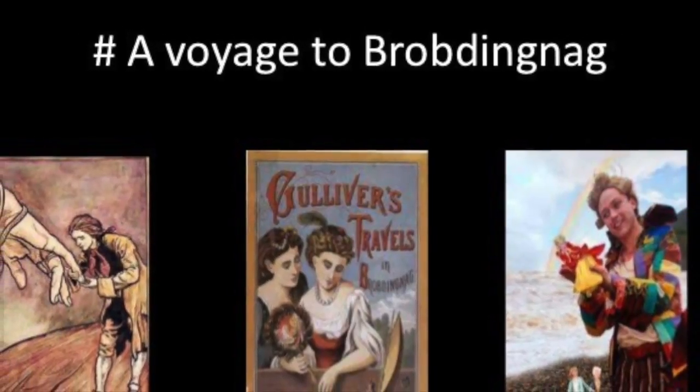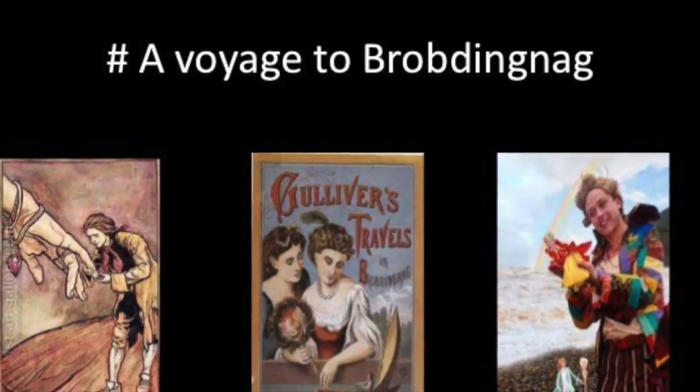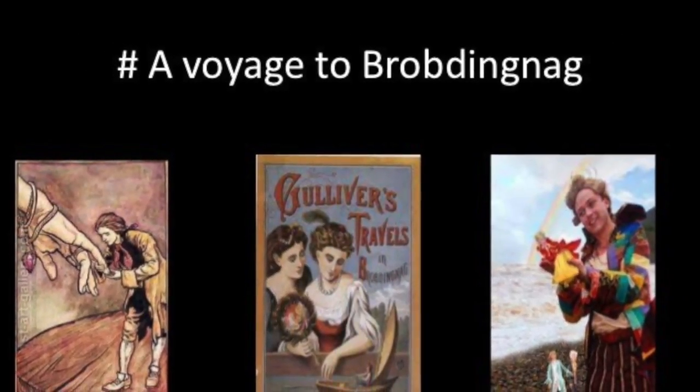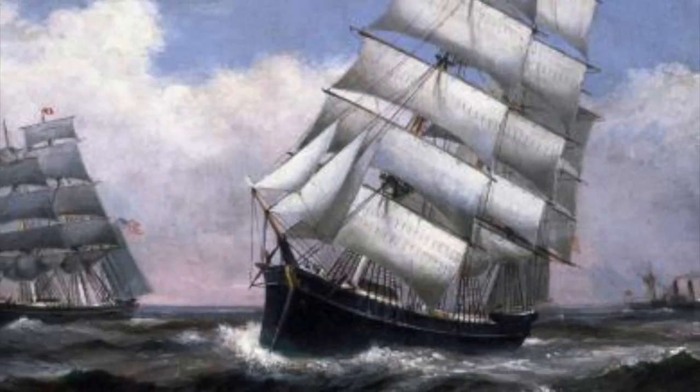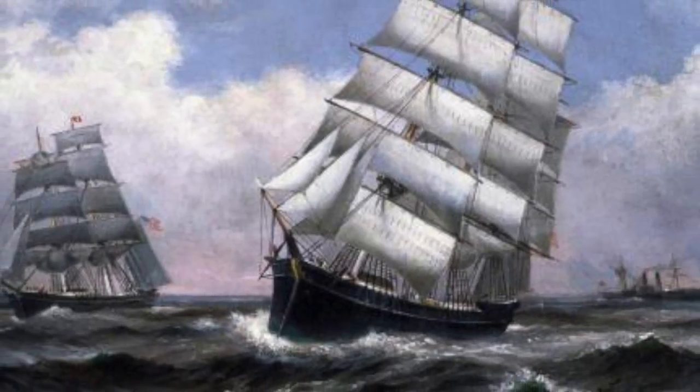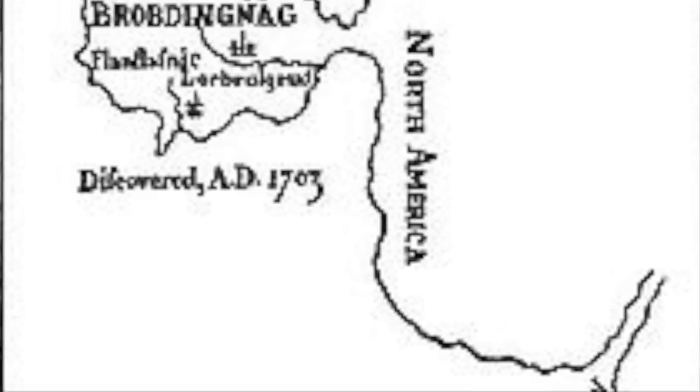A voyage to Brobdingnag, part two of Gulliver's Travels. Gulliver returns home to his wife in England, but no more than two months later, Gulliver embarks on a second voyage.